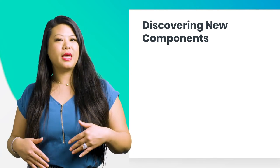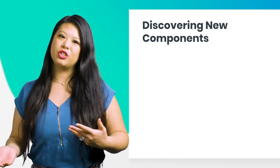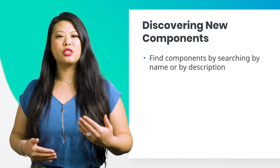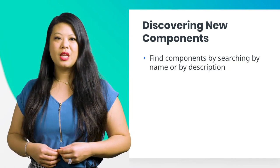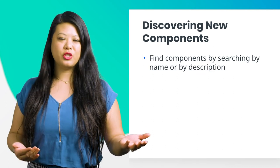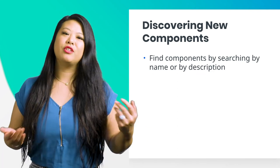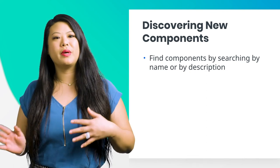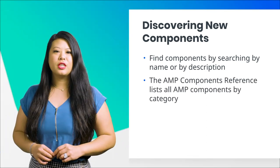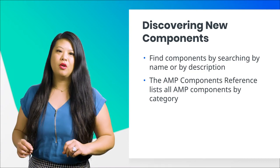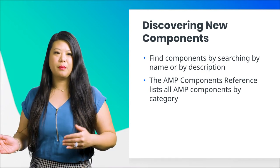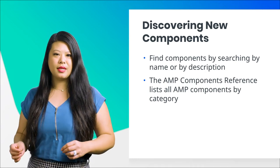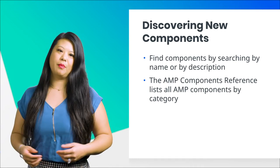Typically when you develop an Amp site you'll be given a set of requirements for a new feature. To find a component that fulfills those requirements you will need to search the list of Amp components. If you know the name of a component you can search for it by name, and if you don't know the name you can search by its description. Searching YouTube videos, for example, will bring up the Amp YouTube component as the first result. Searching collapsible content brings up the Amp accordion component.